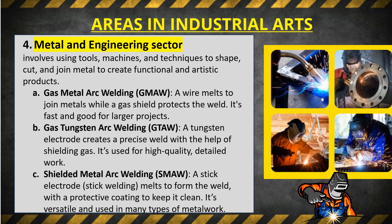Number four: the metals and engineering sector involves using tools, machines, and techniques to shape, cut, and join metal to create functional and artistic products. Sub-areas include: (a) Gas Metal Arc Welding (GMAW) — a wire melts to join metals while a gas shield protects the weld; it's fast and good for larger projects; (b) Gas Tungsten Arc Welding (GTAW) — a tungsten electrode creates a precise weld with shielding gas, used for high-quality detailed work; and (c) Shielded Metal Arc Welding (SMAW) — a stick electrode melts to form the weld with a protective coating; it's versatile and used in many types of metalwork.